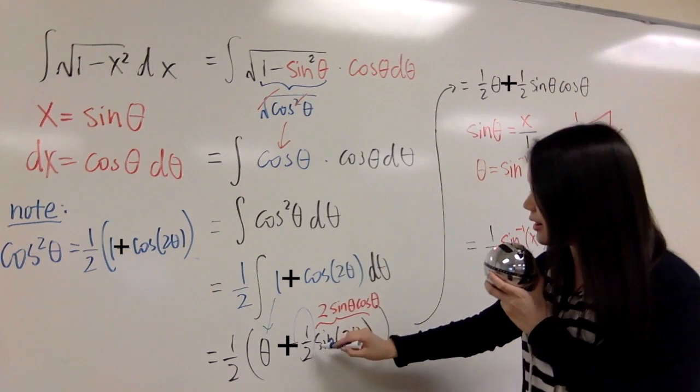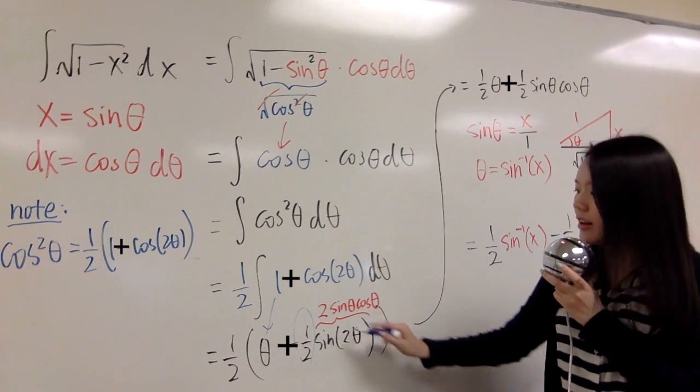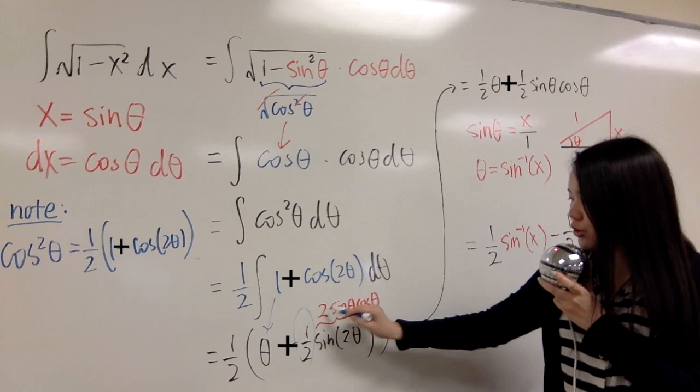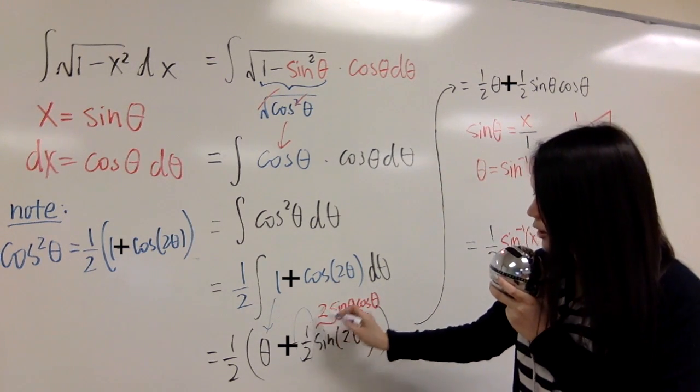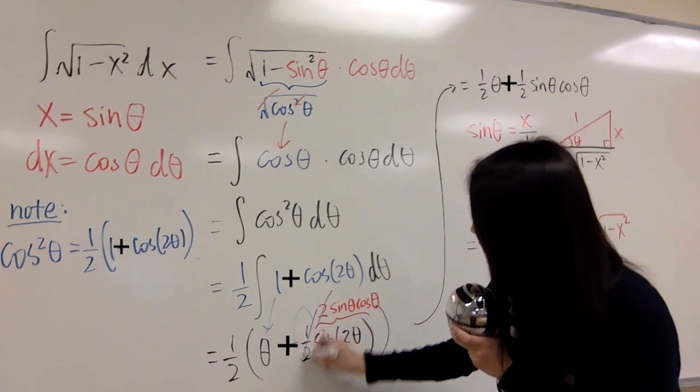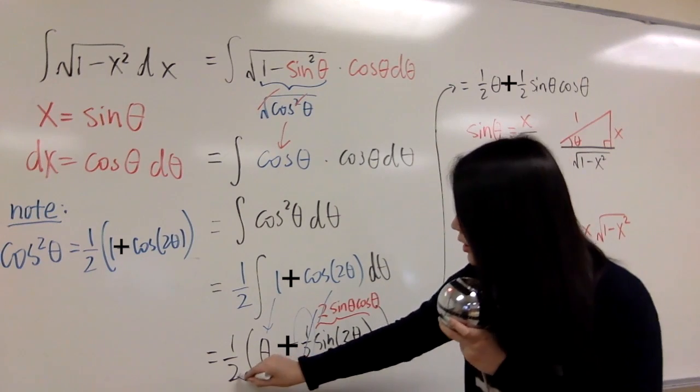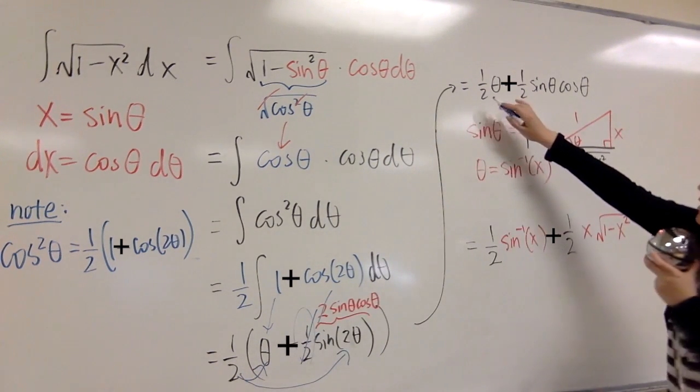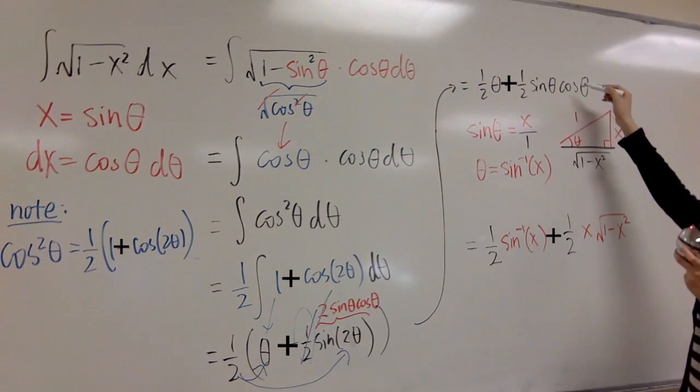Then the answer here is a half sine 2 theta. Now sine 2 theta, you can substitute by 2 sine theta cosine theta, then you cancel out here. So you distribute here, distribute to here, so that's a half theta minus a half sine theta cosine theta.